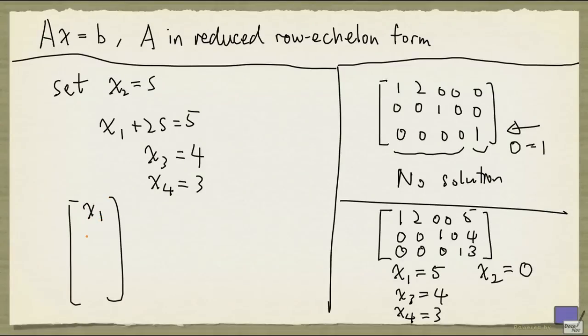And so, expressing the solution as a tuple, we will have x1 is 5 minus 2s, x2 is s, x3 is 4, and x4 is 3. And so this gives us a solution for every value of s that we choose.